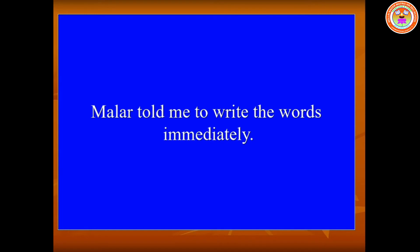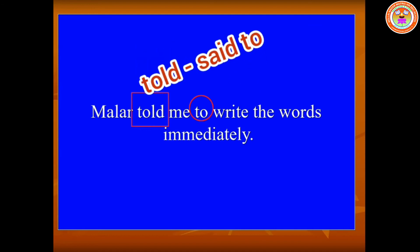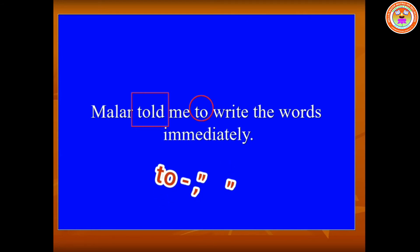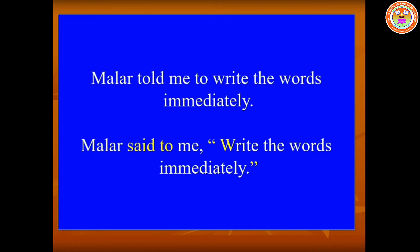Next one: 'Malar told me to write the words immediately.' Let us make the changes. 'Told' should be changed into 'said to' and the conjunction word is 'to', so this is an imperative sentence. We have to take away 'to' and insert a comma and quotation mark. The answer is: Malar said to me, 'Write the words immediately.'